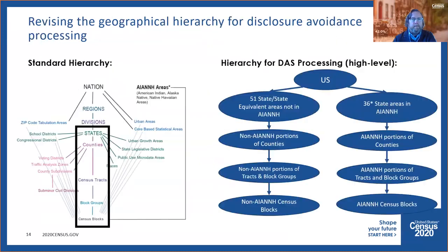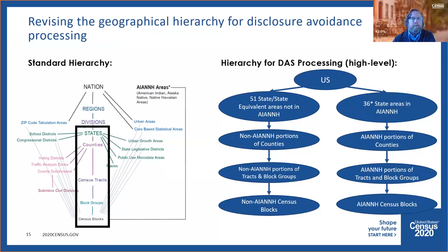To recap the standard hierarchy: you can see the central spine of blocks, block groups, tracts, counties, states, and so on. I've highlighted the geographic entities of importance in DAS processing — states, counties, tracts, block groups, blocks — which nest neatly within each other. There are many other geographic areas off the spine that intersect in various ways. On the right is a contextual view of the two pathways we're taking in optimizing off-spine geographies. Within each state, we divide into the portion within American Indian, Alaska Native, or Native Hawaiian areas — 36 states in 2010 geography, 38 for 2020, including new off-reservation trust lands in Tennessee and Indiana.